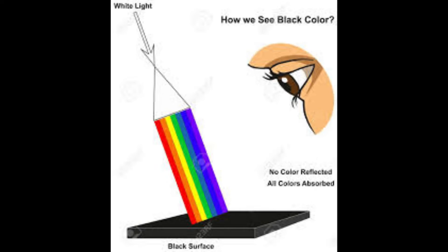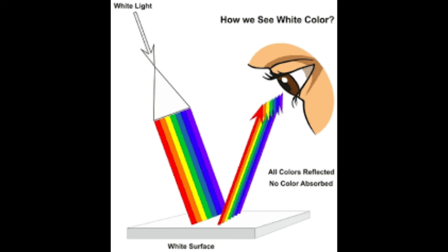When something appears the colour of black, the object absorbs all the visible wavelengths and nothing is reflected back. When something appears the colour of white, all the visible wavelengths are reflected back.